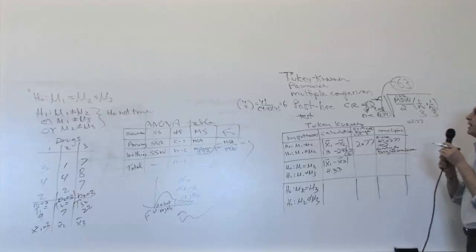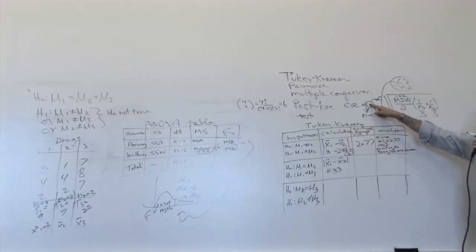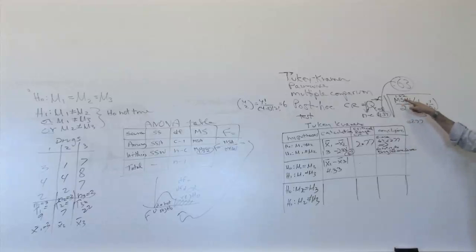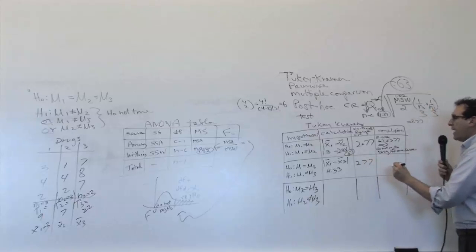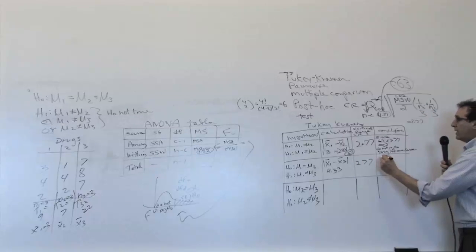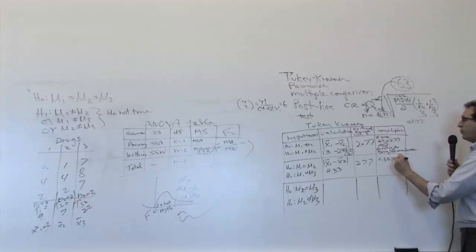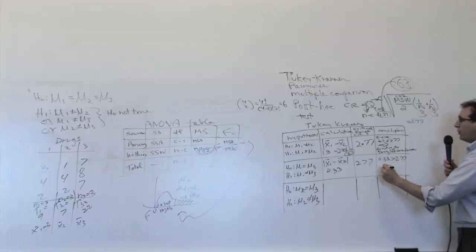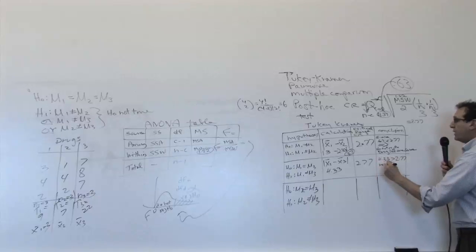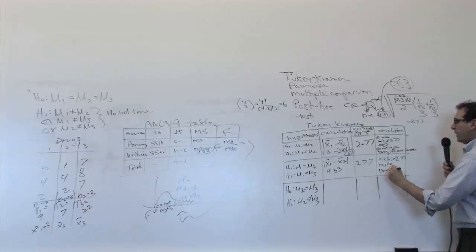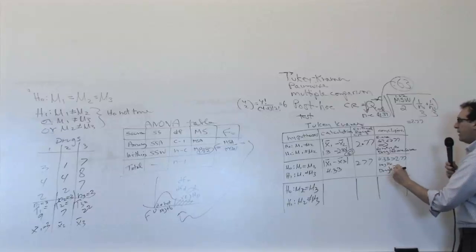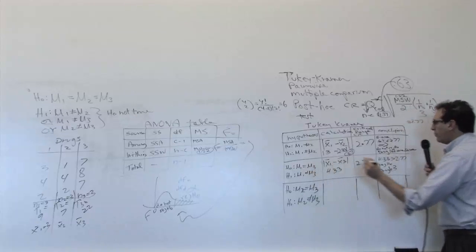What is the critical range? Now you've got to calculate this whole thing again. Well, the Q is going to stay the same. The MSW is going to stay the same. The only question is will the sample size stay the same? In this case, they do stay the same. So there's got to also be a 2.77. And now here we have a different conclusion. Since 4.33 is bigger than 2.77, we're told that we reject the H0, at least the mini H0, which means that drug 1 and 3, because we're comparing drug 1 and drug 3, are different.